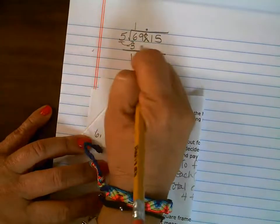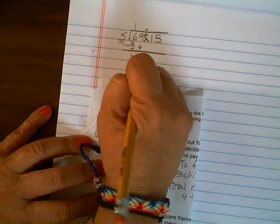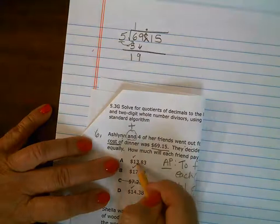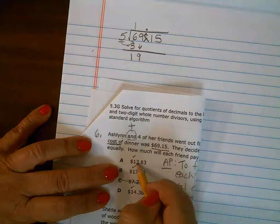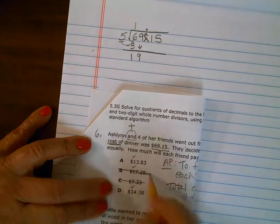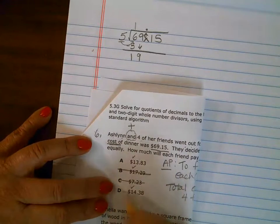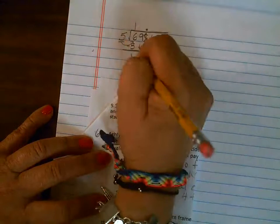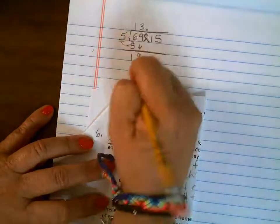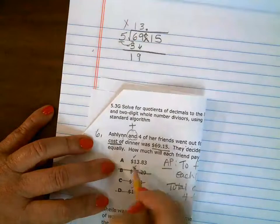All right, how many groups of five go into 19? Well, three times five is 15, seven times five is 35 - too big. Five times four is 20 - too big. So five goes into 19 three times. So do you see how I'm doing that?